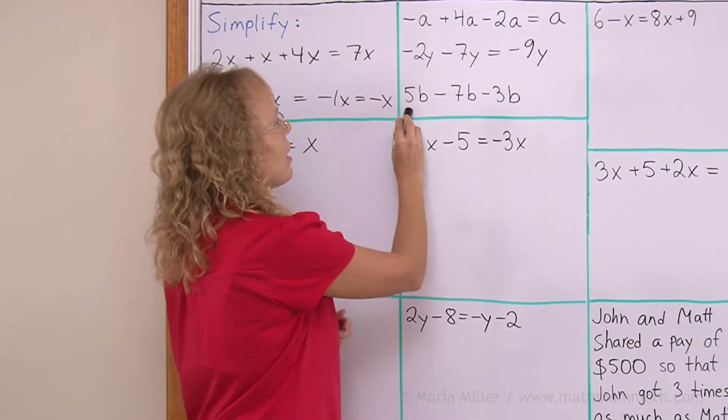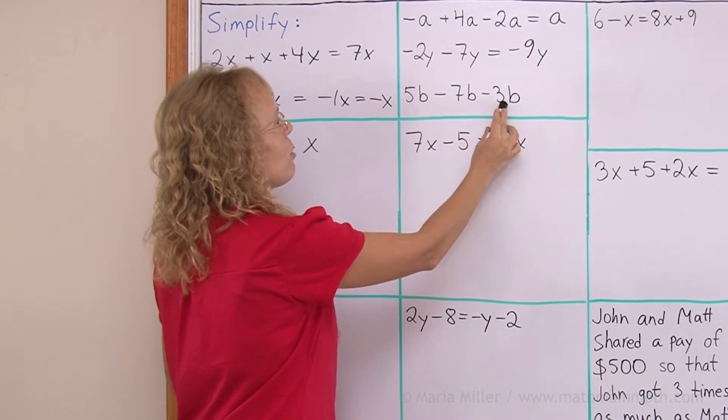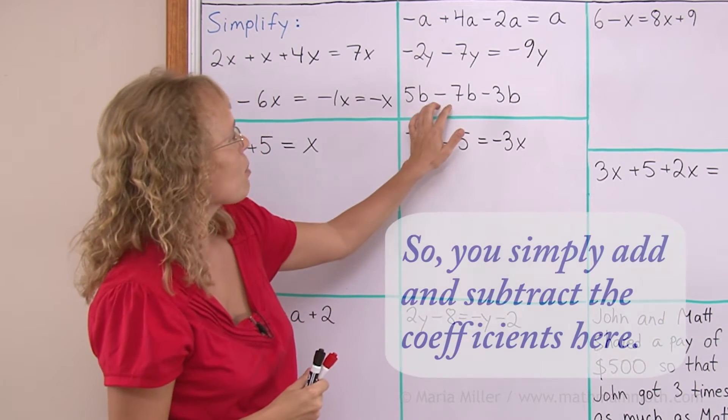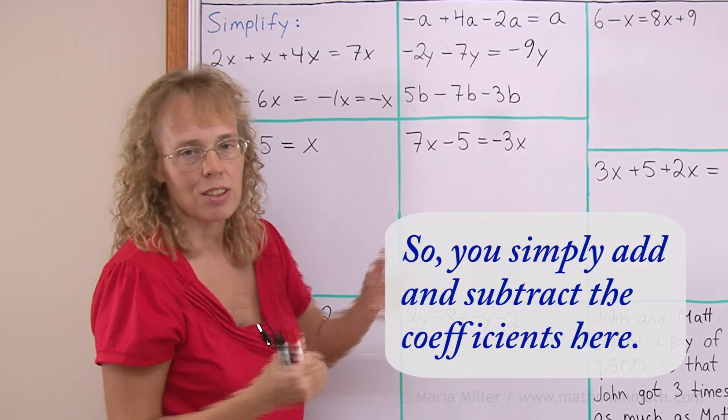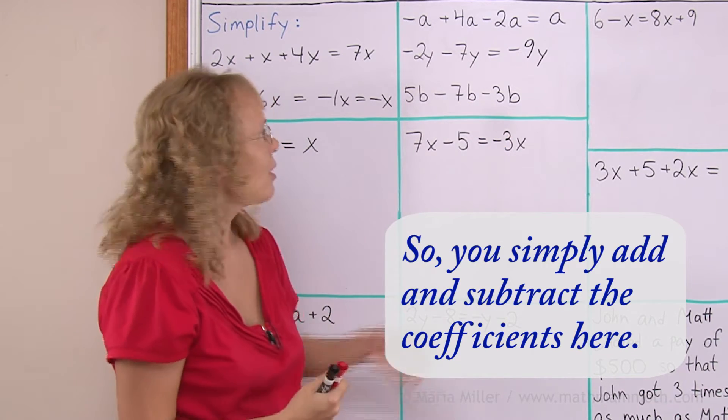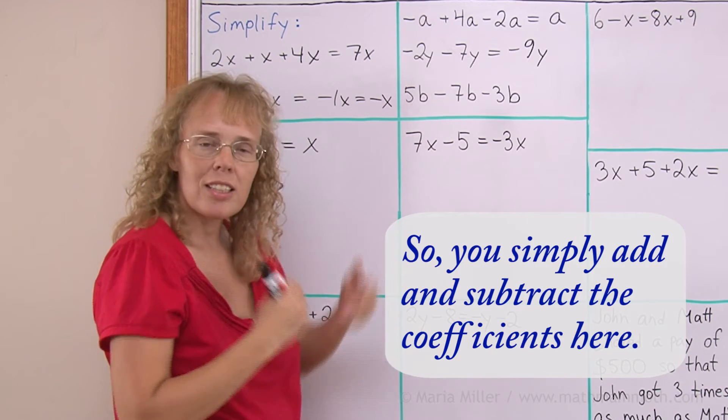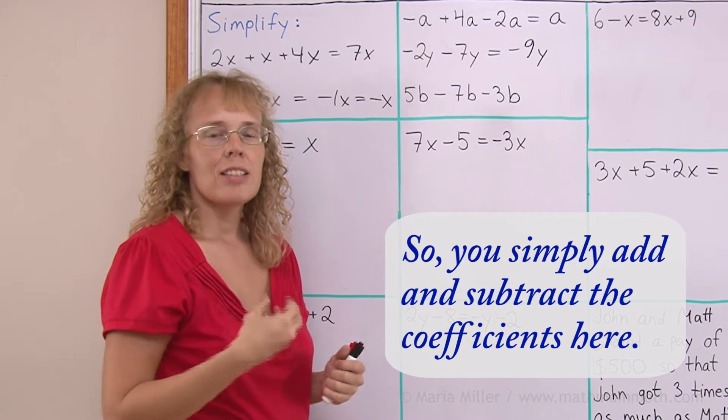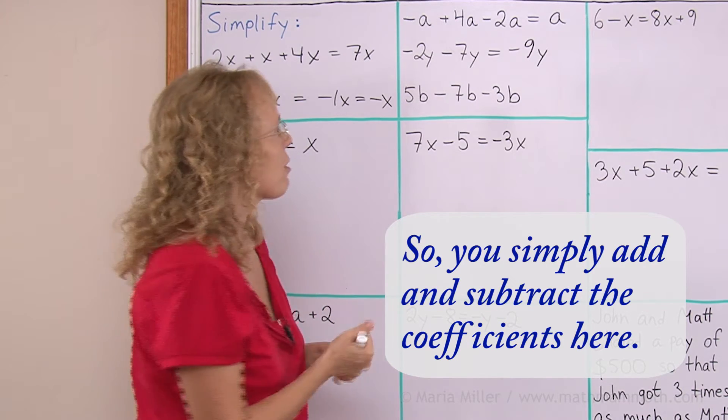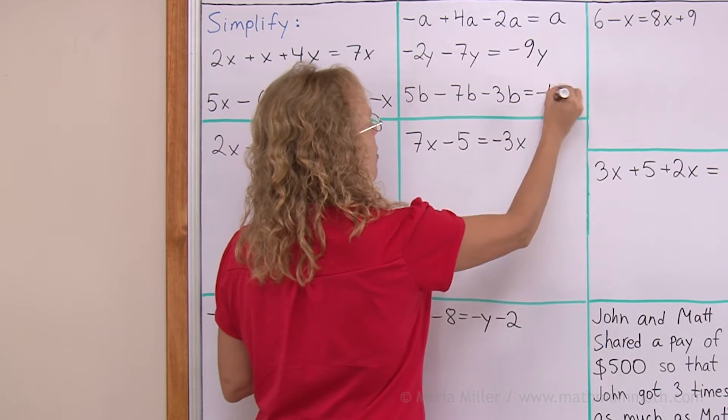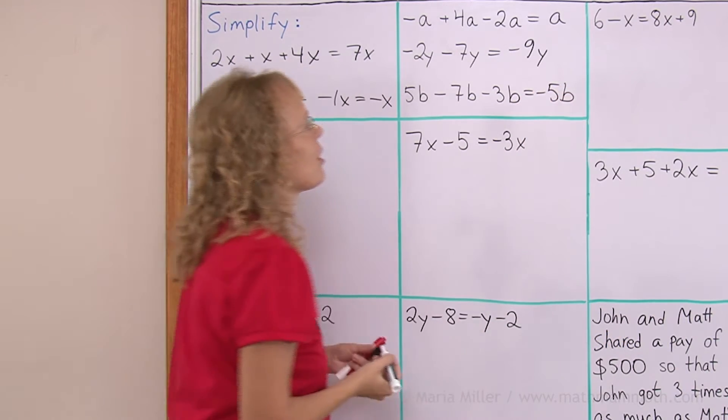And this one here, 5b minus 7b minus 3b. You can see there's minus 7 and minus 3. So, there's actually negative 10 and then 5. Negative 10 and 5 leaves us negative 5. So, this is negative 5 and then b. Don't forget the b, the variable.